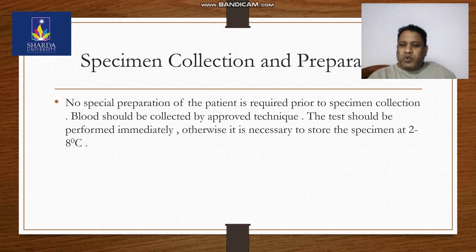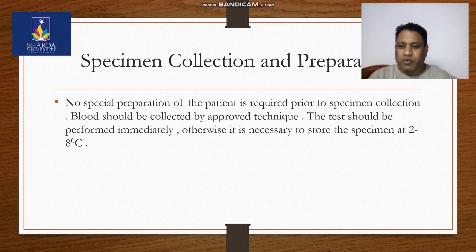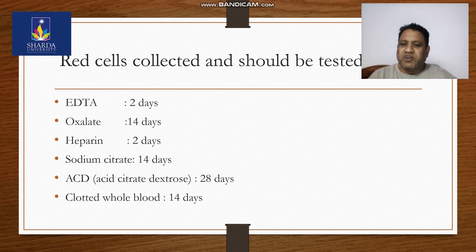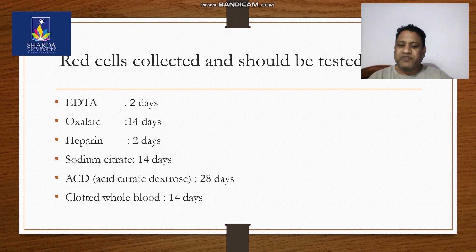Specimen collection and preparation: no special preparation of the patient is required prior to collection. Blood should be collected by approved technique. The test should be performed immediately; otherwise store the specimen at 2 to 8 degrees centigrade. Blood is collected in an EDTA vial, but clotted blood can also be used since we need only cells. Time spans for testing: EDTA 2 days, oxalate 14 days, heparin 2 days, sodium citrate 14 days, ACD 28 days, and clotted whole blood 14 days.